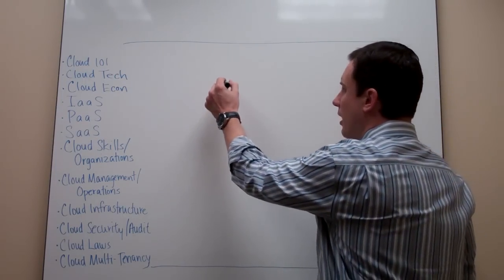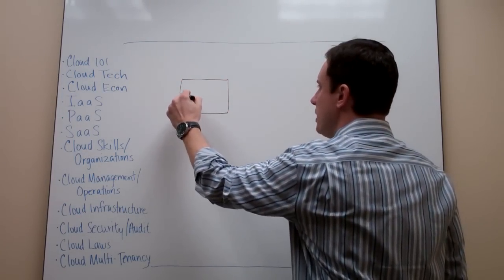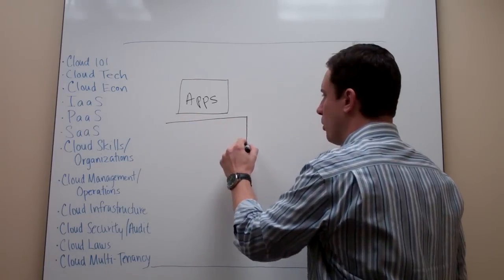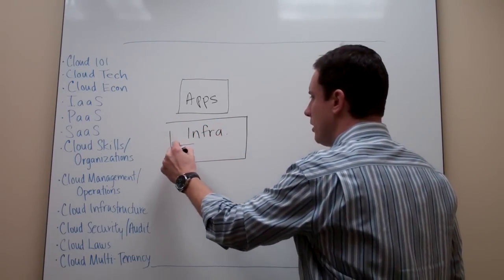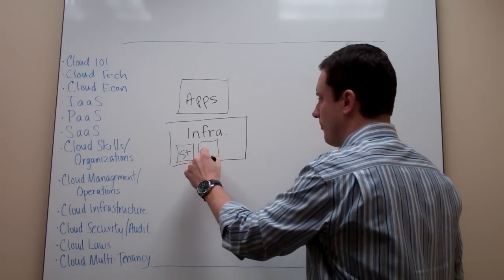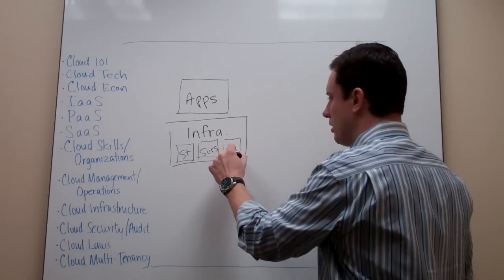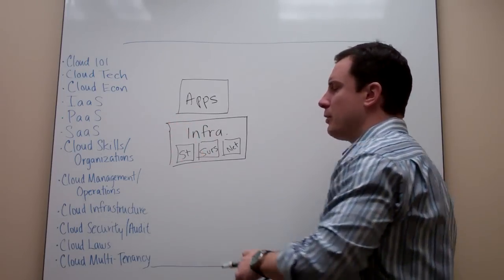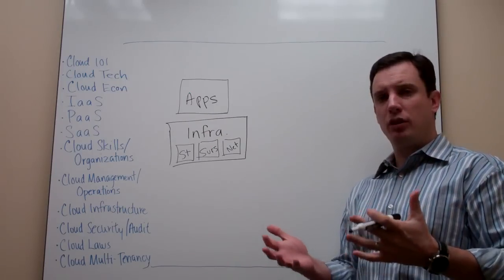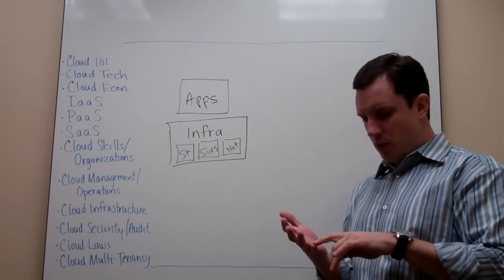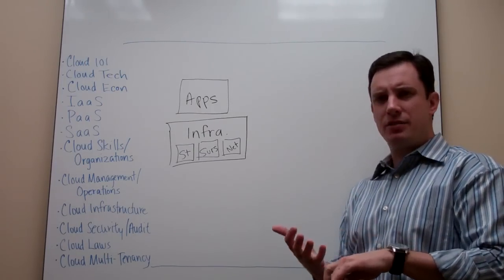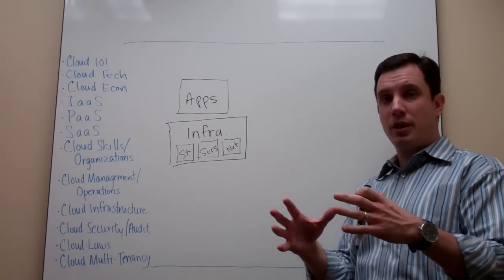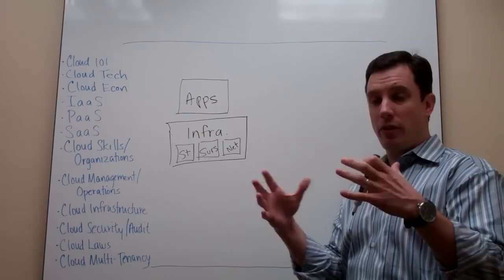It comes down to applications — older or rewritten — sitting on top of infrastructure: storage, servers, and the network. Companies that have been delivering cloud in the public domain have been able to deliver rapid applications on a dynamic basis. They don't necessarily know how many users they'll have at any given time, so they're able to grow resources easily and shrink them depending on peak capacity needs for the business.